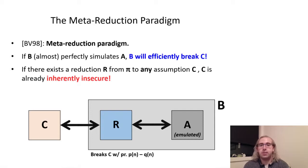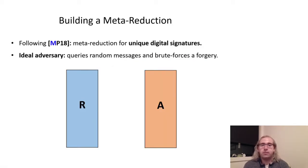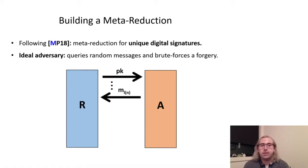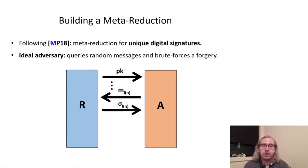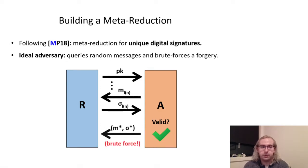Our starting point towards our main result is a meta-reduction from the prequel to this work, done by myself and PAS in 2018, which rules out linear-preserving reductions from unique digital signatures to standard assumptions. For this meta-reduction, the ideal adversary A, on receiving a public key from the reduction, begins by making a large number of signature queries for random messages. We refer to this number as L, since these queries will ultimately be the analog of the key-opening queries to each instance in our final reduction. On receiving responses from the reduction R, A verifies using the public key that the responses are correct, aborting if not, and then uses brute force to forge a signature for a new message that likewise verifies with respect to the public key. It's fairly straightforward to see that this ideal adversary will break the security of the signature scheme with probability 1.